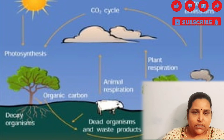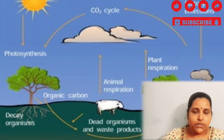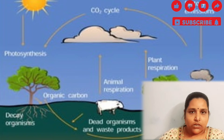In plants, nitrogen is not reached directly, and animals also do not receive it directly. Plants with rhizobium bacteria fix nitrogen in the soil and convert it into nitrites, nitrates, and ammonia. The bacteria name is rhizobium, which converts nitrogen from the atmosphere into nitrites, nitrates, and ammonia.